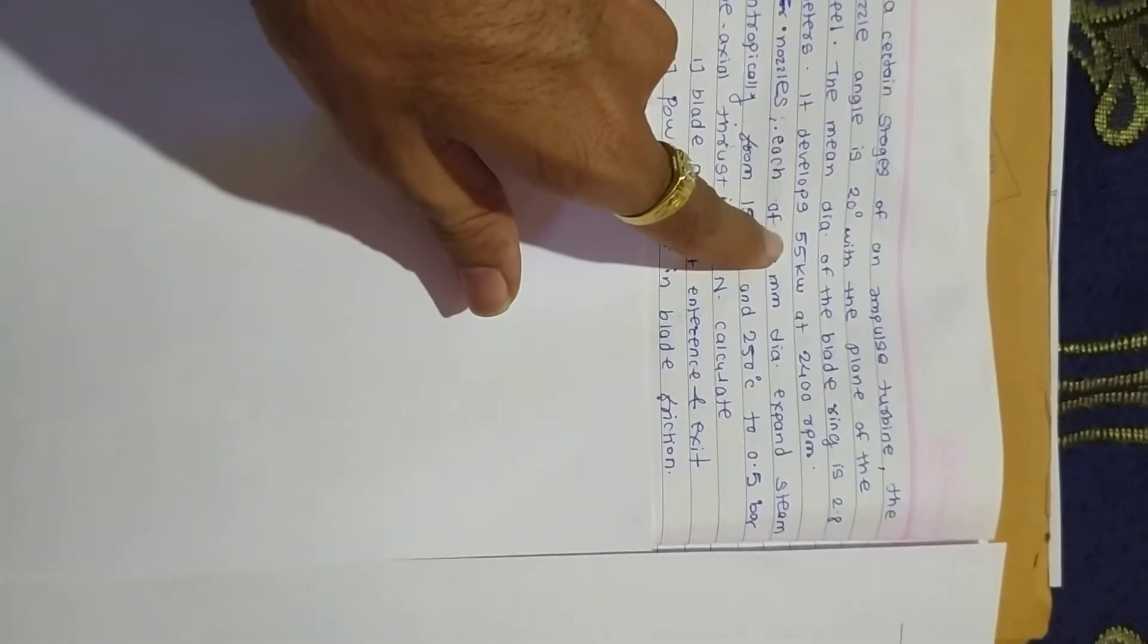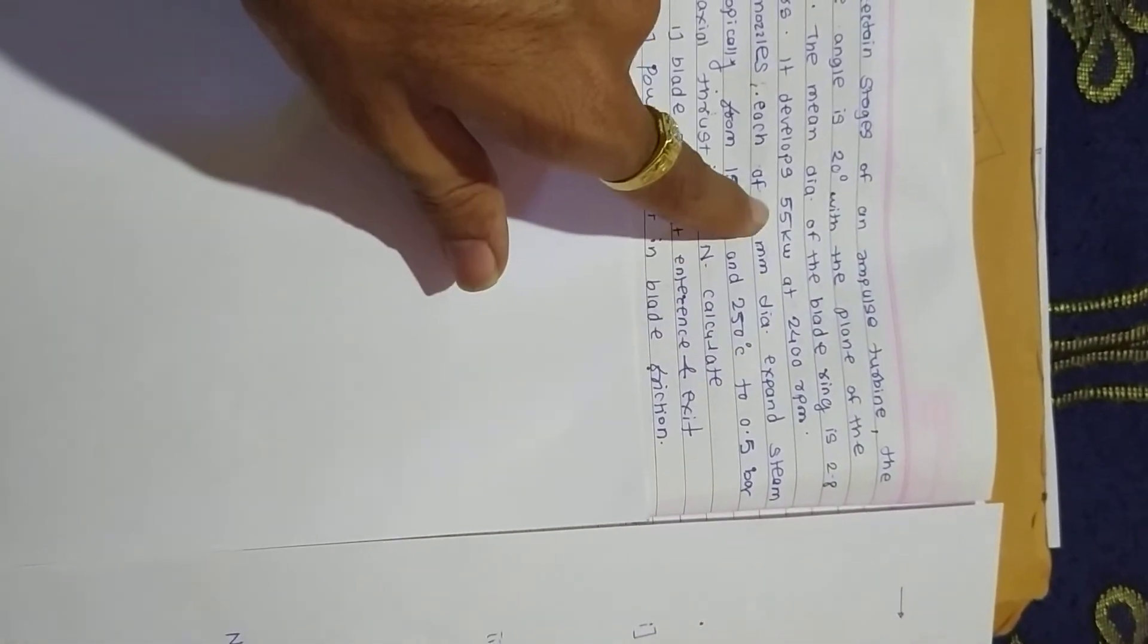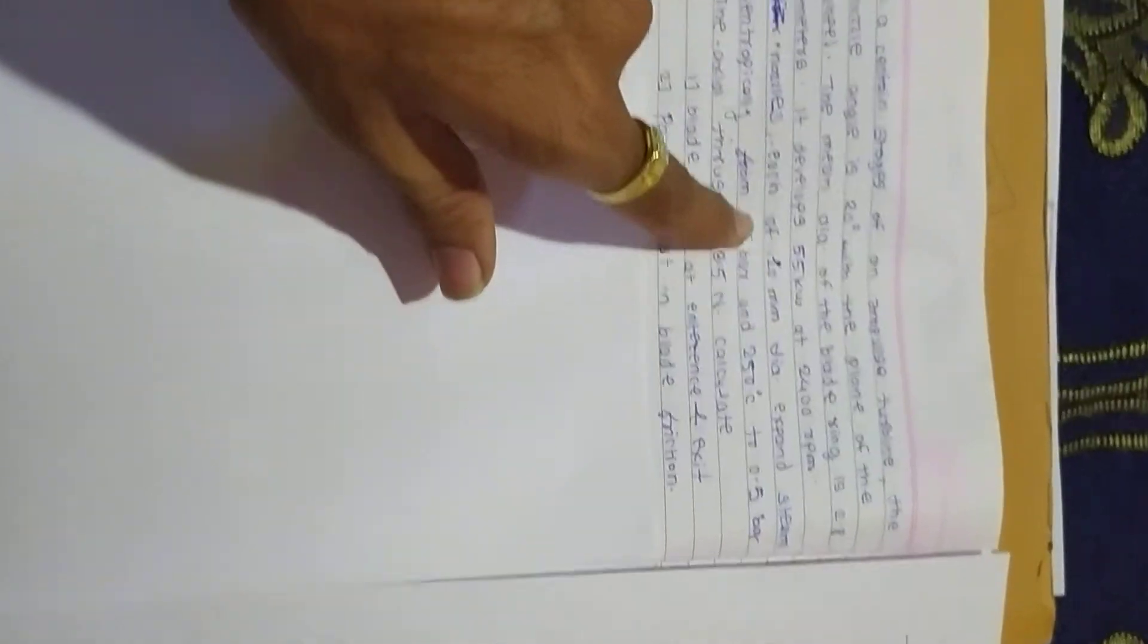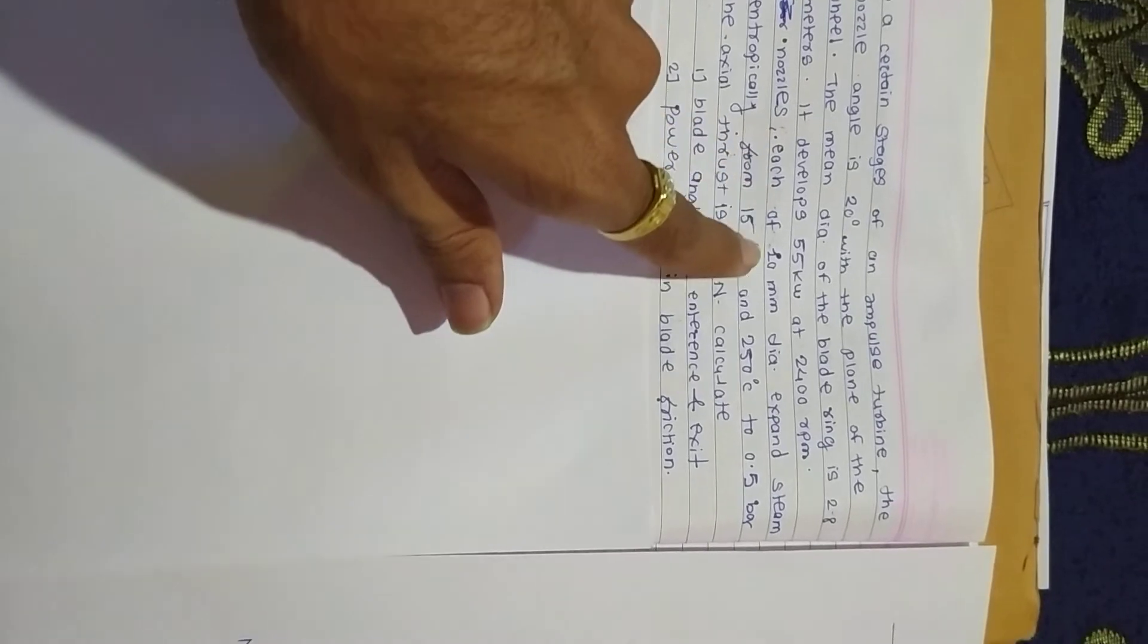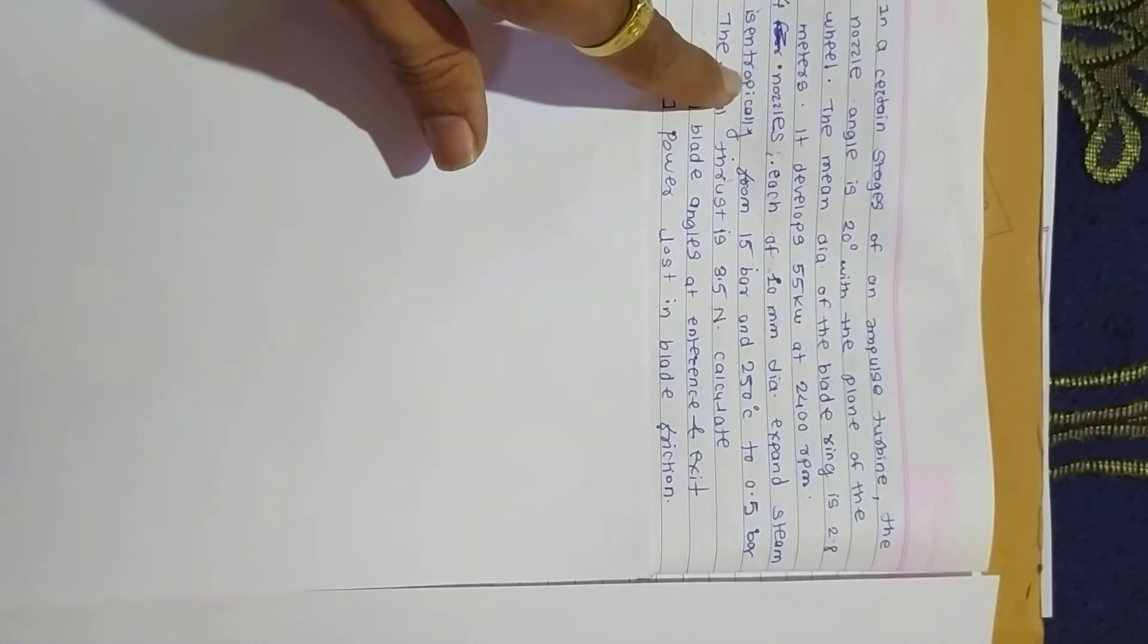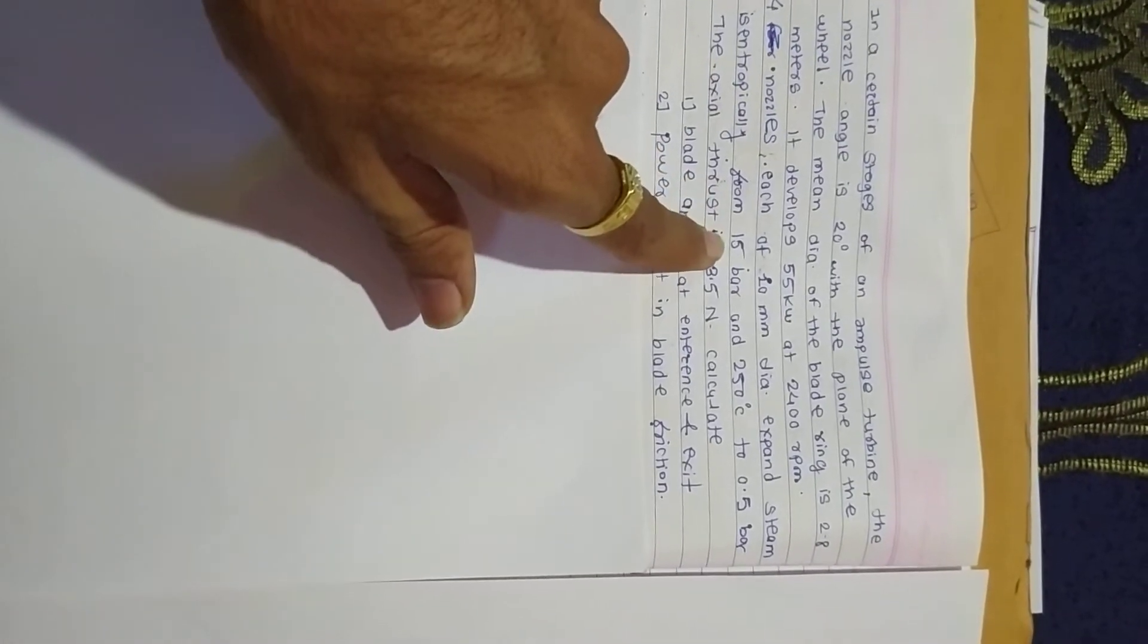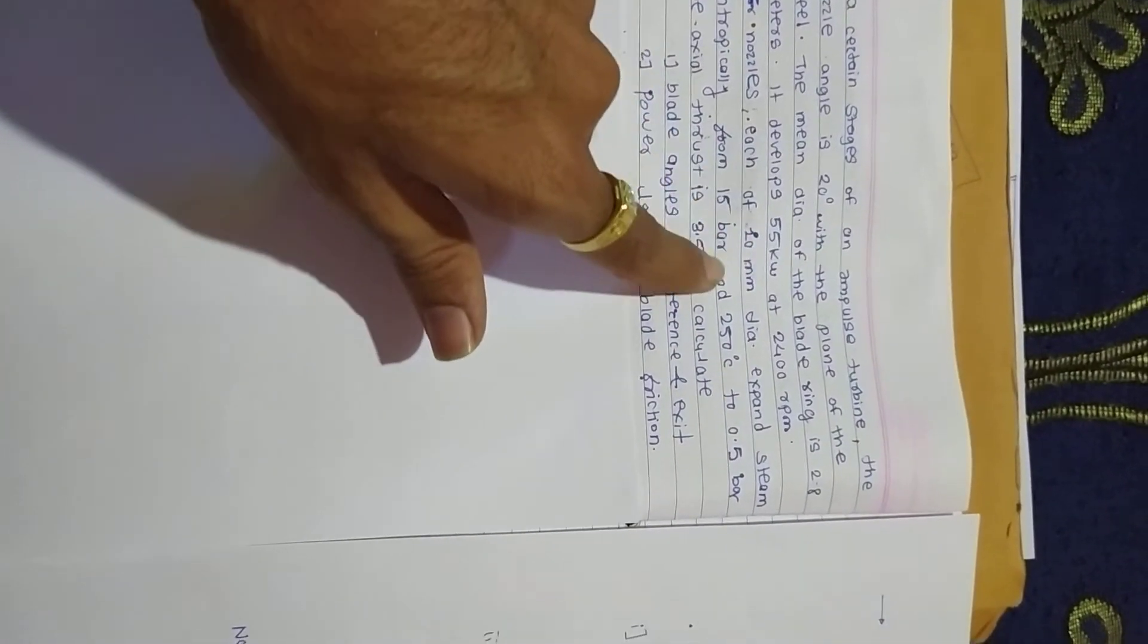It develops 55 kilowatts at 2400 RPM. They give power and N RPM. Four nozzles, each of 10 mm diameter nozzle diameter, expand steam isentropically. We know steam expands isentropically in the turbine from 15 bar and 250 degrees Celsius to 0.5 bar.